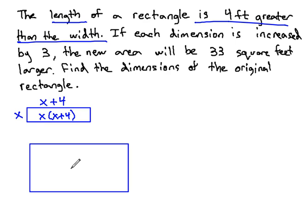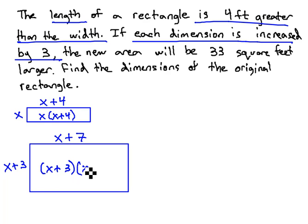Then, we have another rectangle. We're told in this other rectangle, each dimension is increased by 3. So what used to be just x is going to be increased by 3 to become x plus 3, and what used to be x plus 4 is going to be increased by 3 also. x plus 4 plus 3, or if we combine the 4 and 3, that would be x plus 7. And the area of that, then, length times width is x plus 3 times x plus 7.